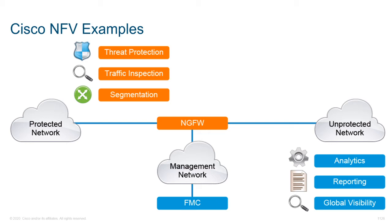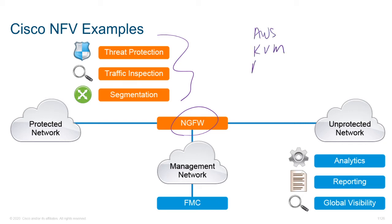A couple of things we want to drill down into: many of us know that our next-gen firewall has the ability to include things normally found in an ASA or an IPS — like Firepower — and we're putting all of that into one virtualized device. This actually comes in a virtualized environment for AWS, KVM, and I've noted this on some of the other slides.